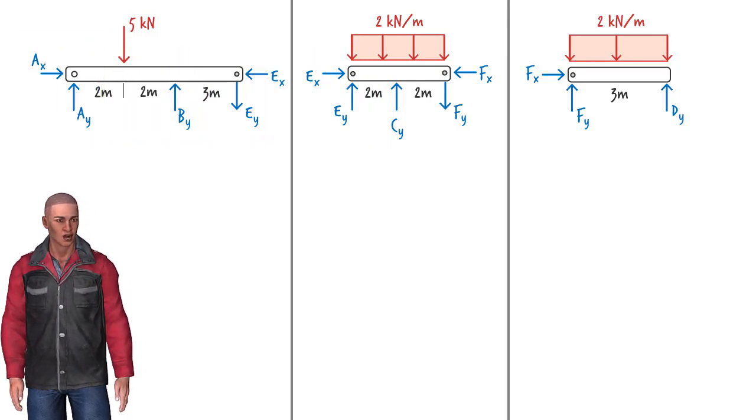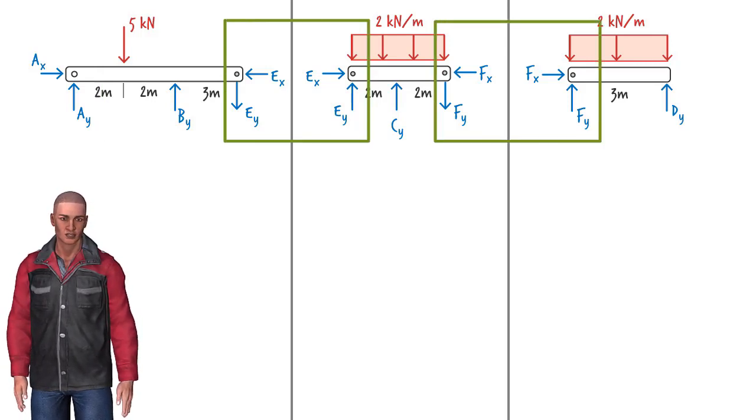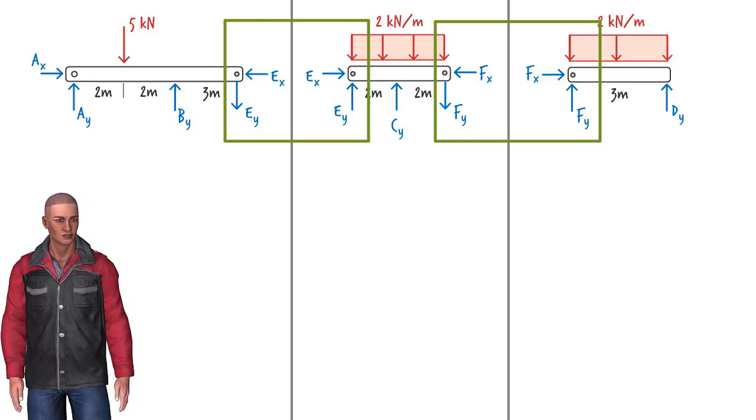Note that the two forces at hinge E or F are shared between the left and right segments, except that they act in opposite directions since their sum must be zero.